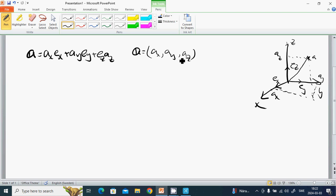And here we have vector a plus vector b equals (ax + bx, ay + by, az + bz).